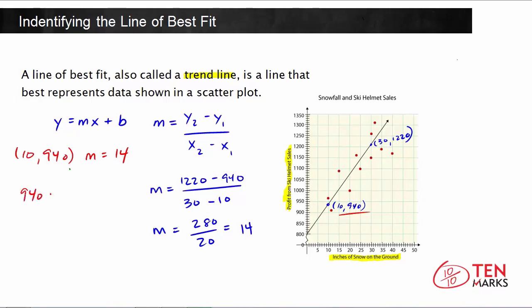940 gets substituted for y, and then 14 gets substituted for m, multiply that by the x coordinate, which is 10, and then plus b.